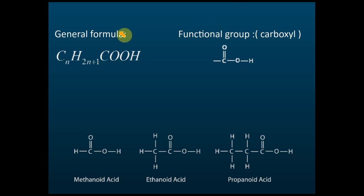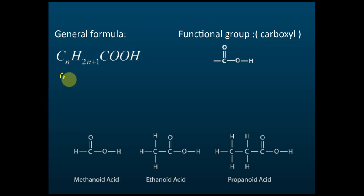The general formula of carboxylic acid is CₙH₂ₙ₊₁COOH. You need to know that n starts from zero. For most other homologous series n starts from one, and for alkenes n starts from two, but for carboxylic acids n starts from zero.